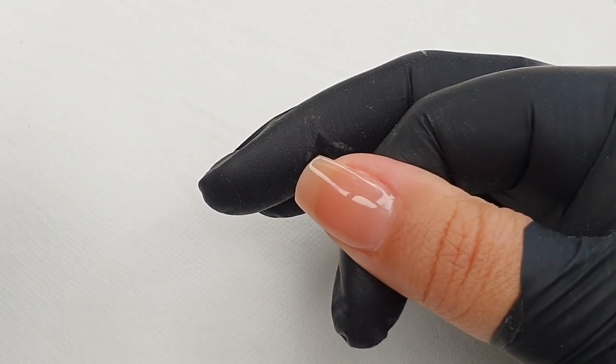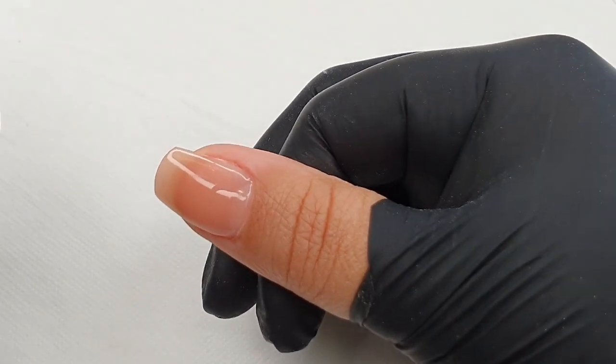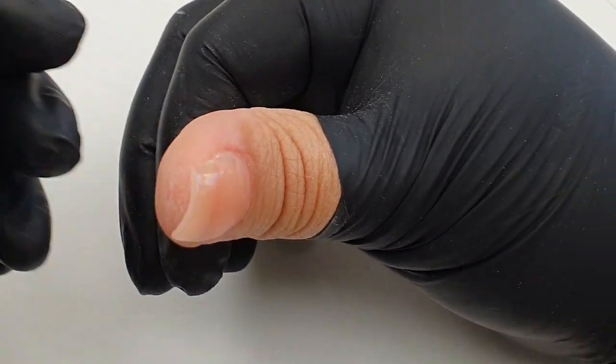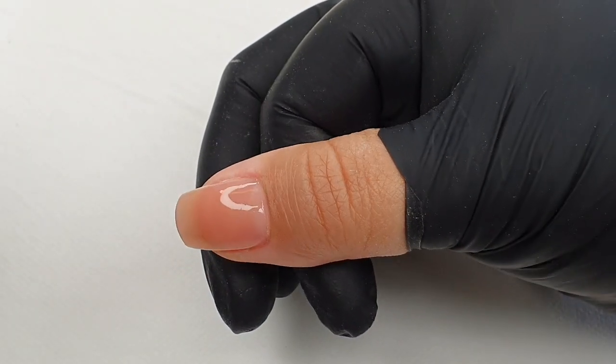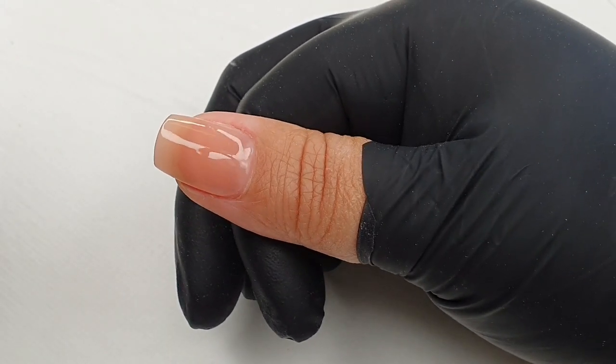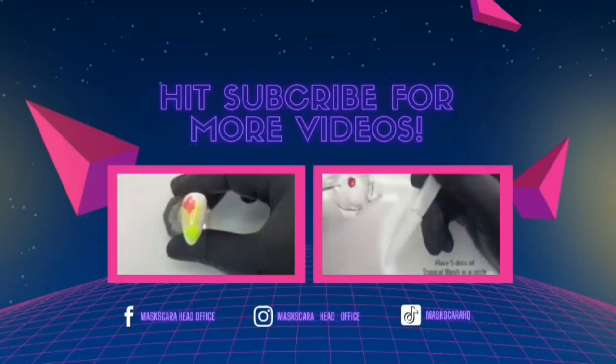And there we go. That's our finished Sculpted Nail with Infinity Gel. I'm sure you will agree it is a beautiful finish. I used the shade Cover Peach. So guys, try it. Practice makes perfect. It's an easy way of building nails. It's a beautiful product to work with. I hope you enjoyed this video and have fun with your Infinity Gel.